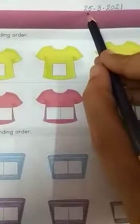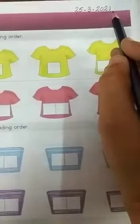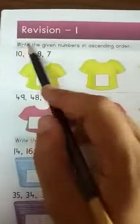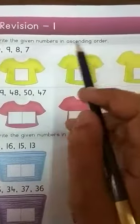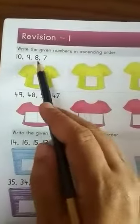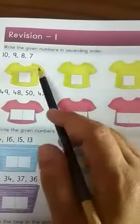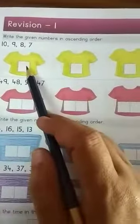So children, before starting, put today's date 25-3-2021. Now read the heading. Write the given numbers in ascending order. See children, here some numbers are given. We have to arrange these numbers in ascending order.